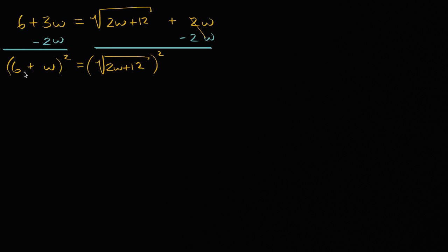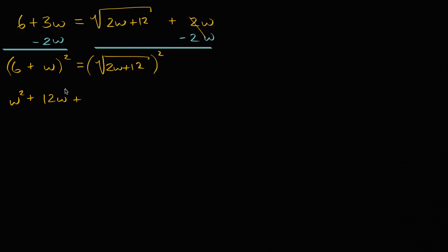So if we square both sides, on the left-hand side we're going to have w squared plus two times their product, so two times six times w, that's 12w, plus six squared, which is 36. That is equal to — if you take the square root and square it, you're going to be left with two w plus 12.